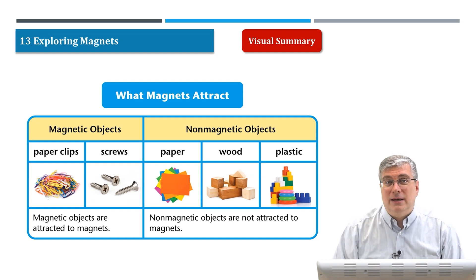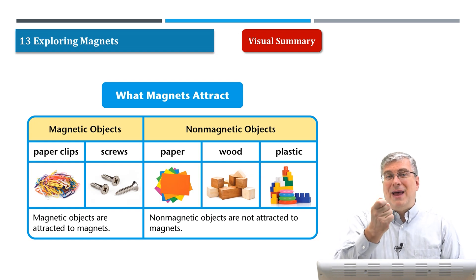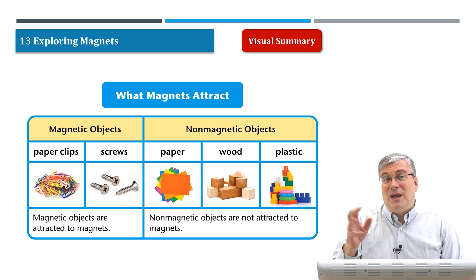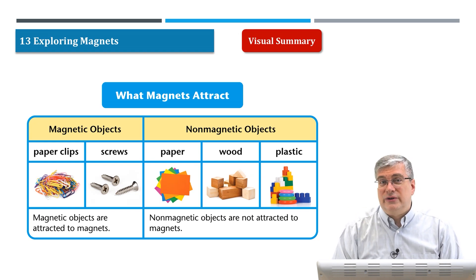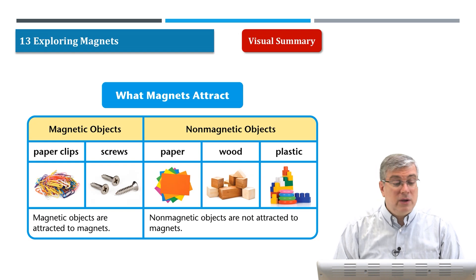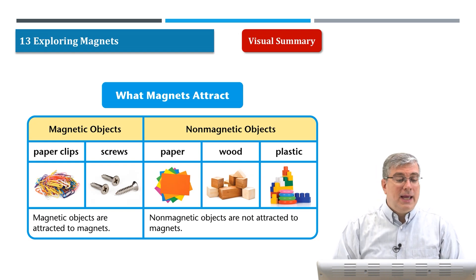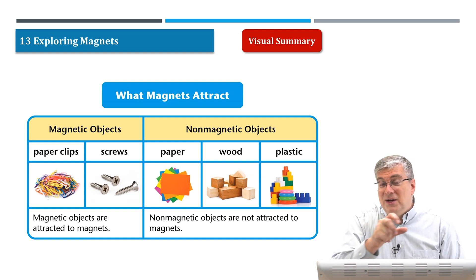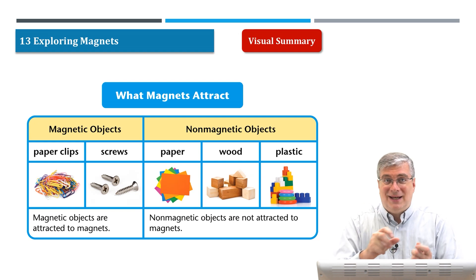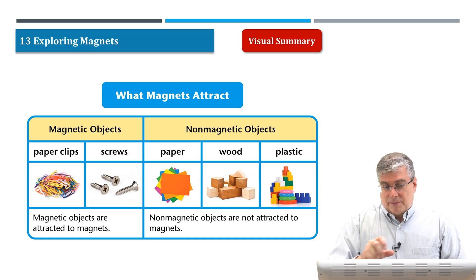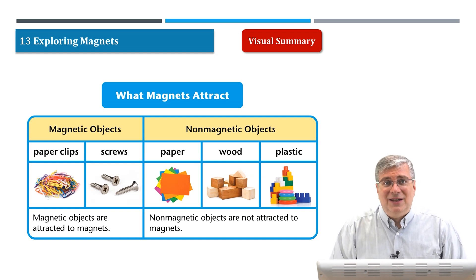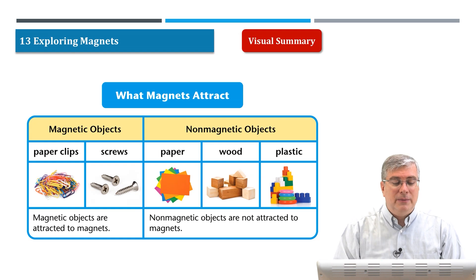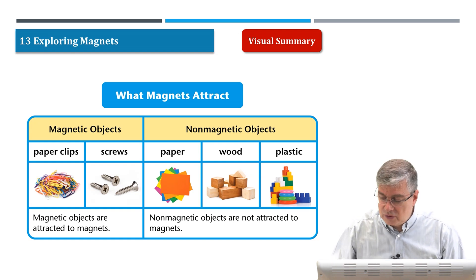Paperclips is a good example. If you have a magnet, you can go to your stationery store or school supply store and find lots of magnets. And if you buy a box of paperclips, you can have fun playing with the magnet and making the paperclips do some strange things. So magnetic objects include things like paperclips and screws.